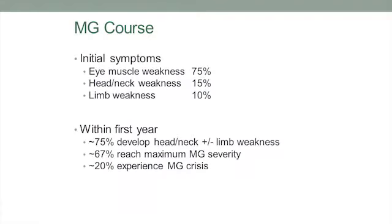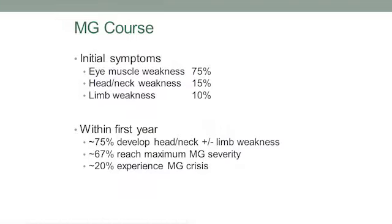In almost all patients, the initial symptoms are in the eye muscles — not always, but in most. Head-neck weakness can occur initially in 15%, and limb weakness as the initial manifestation is less common. Within the first year, about three-quarters of patients develop limb weakness, so it becomes generalized. Even if it starts in the eye muscles, it becomes more generalized in about three-quarters within the first year.